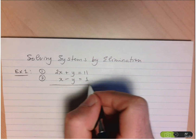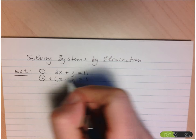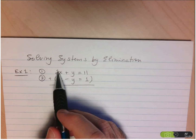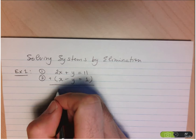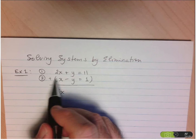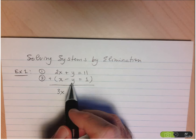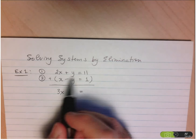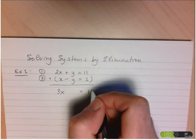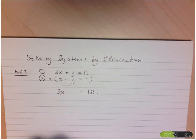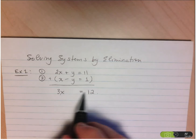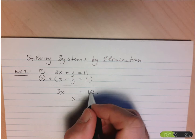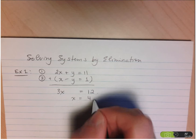Let's add the two equations together. I've got 2x plus x, which is 3x. Y plus negative y is 0, so I don't need to write that. And 11 plus 1 equals 12. What I'm left with is a very simple equation to solve: 3x equals 12, so x equals 12 divided by 3, which is 4. In two simple steps I've managed to solve for the x value in this system of equations.